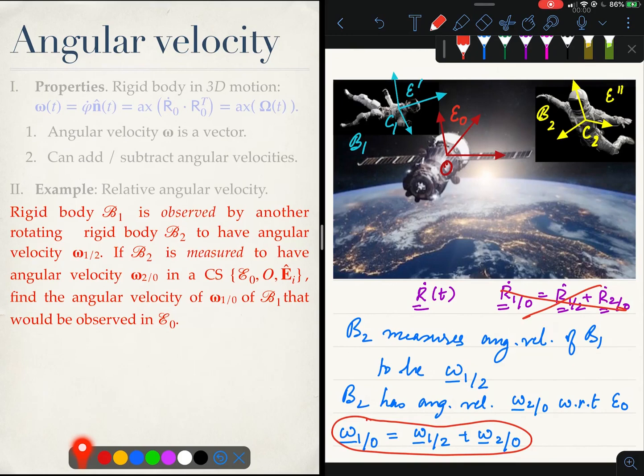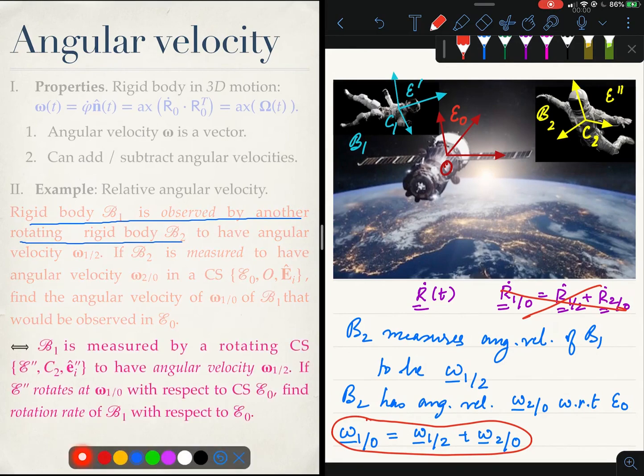The problem with dynamics is the same physical concept is often spelt out in very different ways. It is a question of language. For example, over here I have written down rigid body B1 is observed by another rotating rigid body B2. I could just as well have said that B1 is measured by a rotating coordinate system E double prime. You need not know who this astronaut is. All you need to know is there is a coordinate frame attached to him. You just need to know his BFCS.